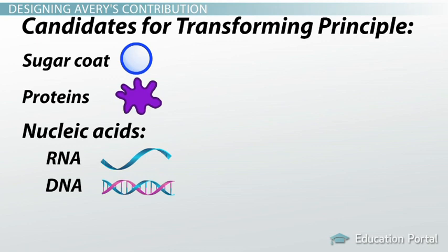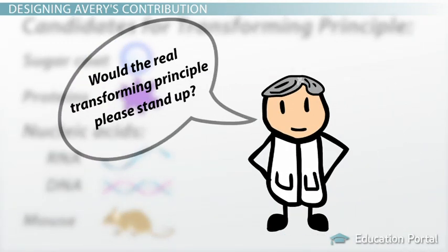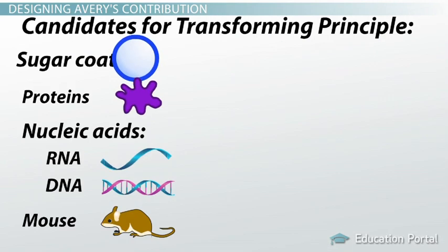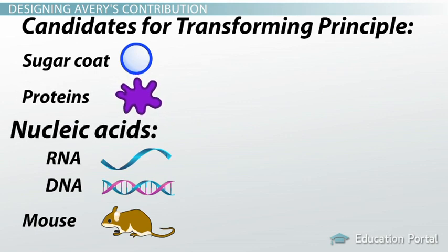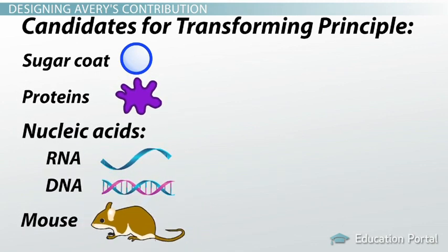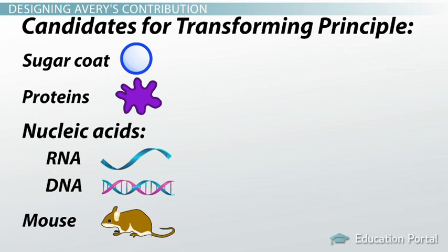Avery also had to consider another possibility: the immune system and blood of the mouse itself. Armed with this list of candidates, Avery could now continue designing his experiment to identify the transforming principle. Since he was going to have to test so many different factors, Avery had to make sure he could separate each factor from the rest. In other words, he had to control for multiple variables, testing each factor to see if it was the transforming principle without including any of the others.